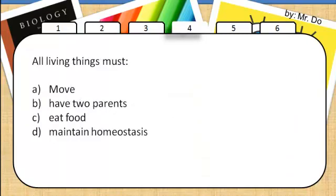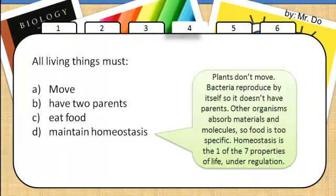Number 4, all living things must. All living things must maintain homeostasis. Plants do not move. Bacteria reproduce by itself so it doesn't have parents. Other organisms absorb materials and molecules so food is too specific. Homeostasis is now one of the seven properties of life under regulation.